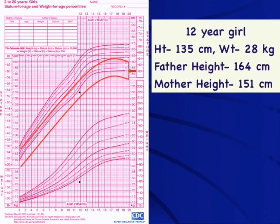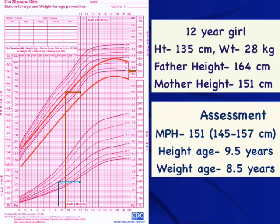The third question is about the weight age and height age of this child. Height age is the age at which the current height becomes the 50th centile — you draw a line from the current percentile to where it meets the 50th percentile line, then draw a perpendicular to the x-axis. This girl at 12 years of age has a height age of 9.5 years. Similarly, the weight age comes to 8.5 years. So this girl has familial short stature with a nutritional component.